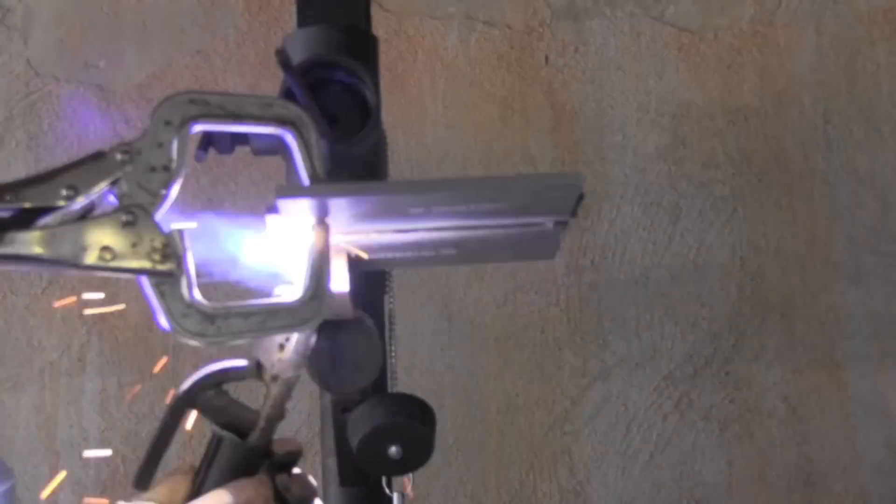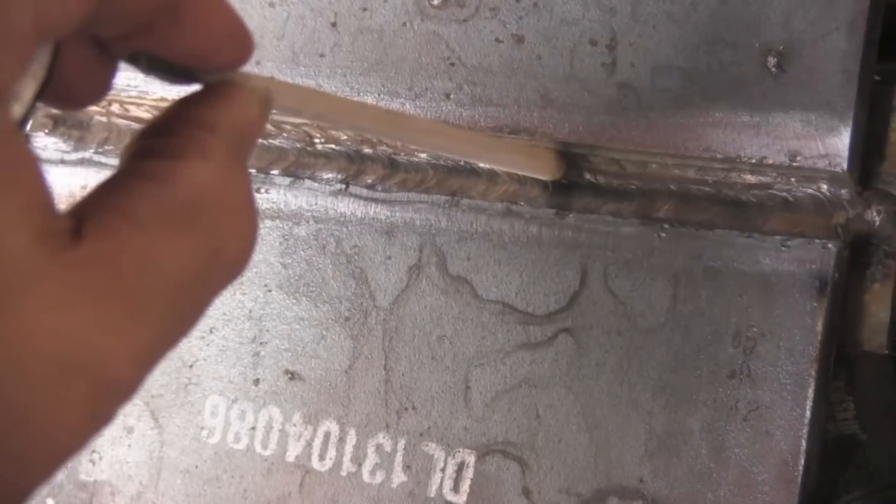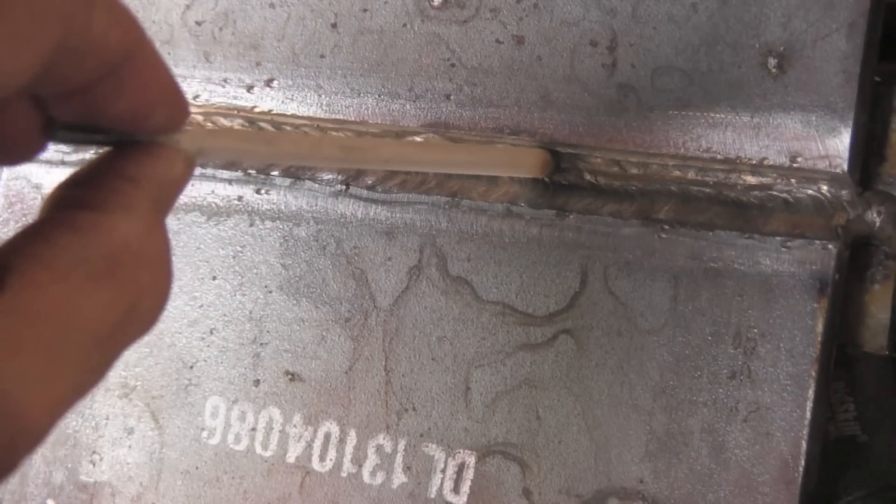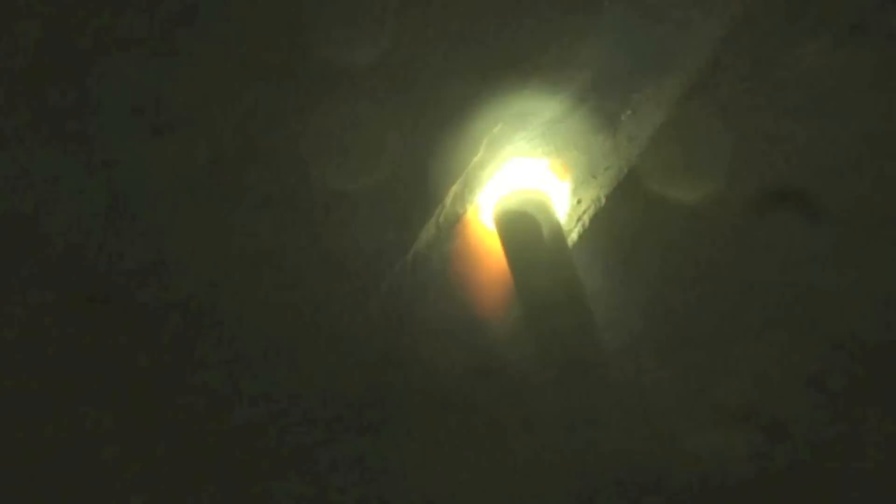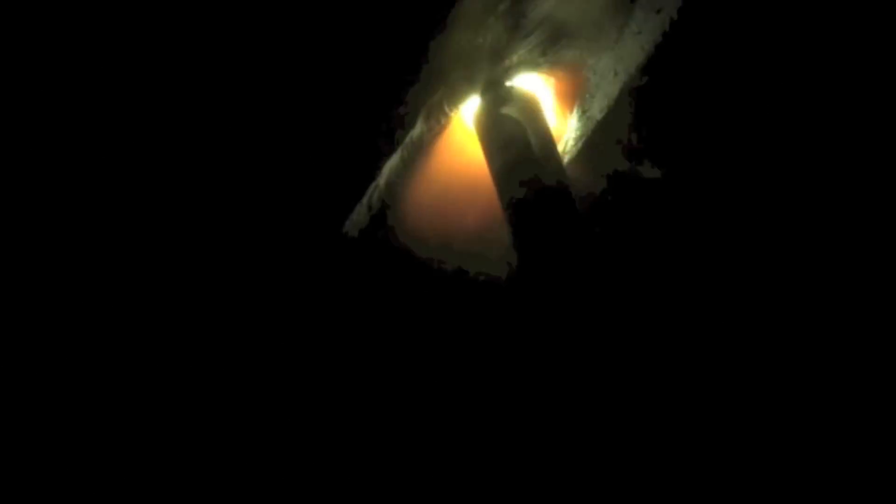An overhead weld test a lot of times goes along with the vertical. That's a common test. A 3G and a 4G with a backing strap is very common. Same thing applies. You've got to be careful not to trap yourself on that second bead or third bead or whatever. You've got to leave yourself room to get in there. Another big tip is you don't want to go colder on overhead. You want to have it good and hot. Just use a real tight arc.